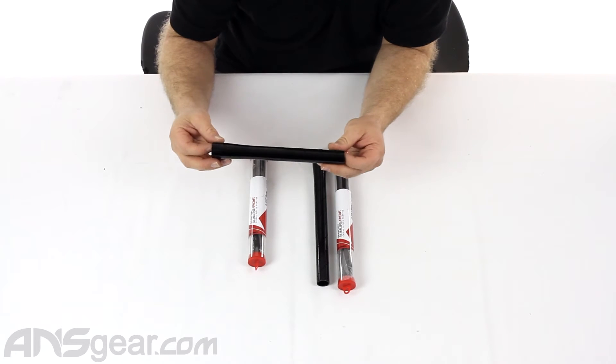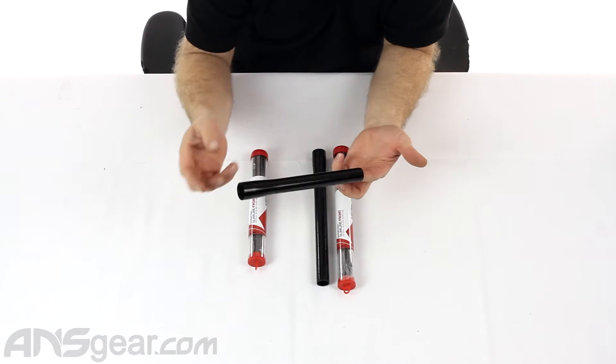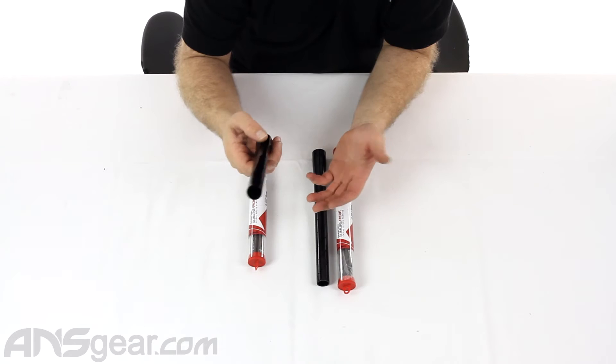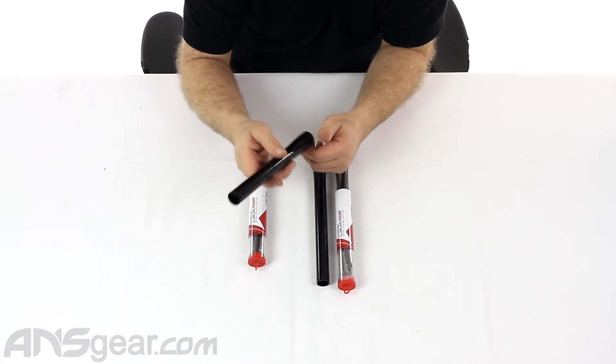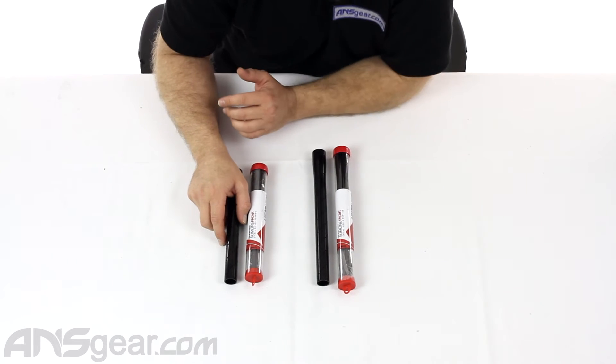And this is the Slimline Spiral Ported. So it has lots of spiral porting in a spiral pattern, very reminiscent of like an All-American style porting. Lots and lots of holes running across the whole thing. Should help with sound signature with the barrel, make it a little bit quieter.